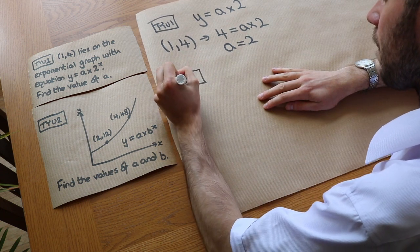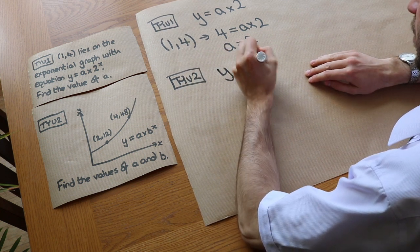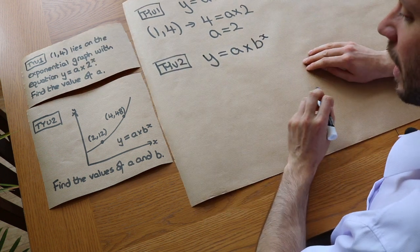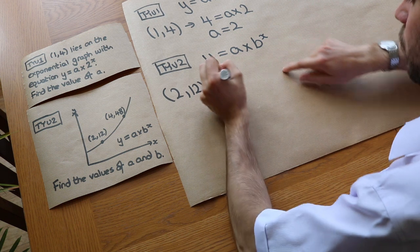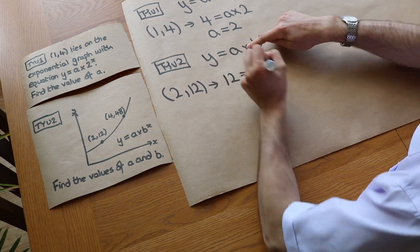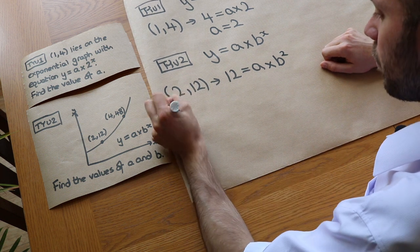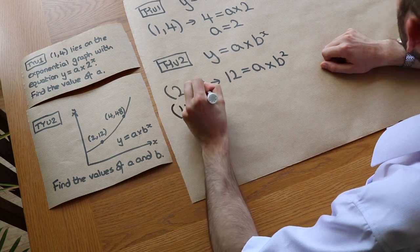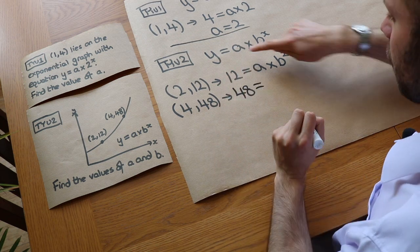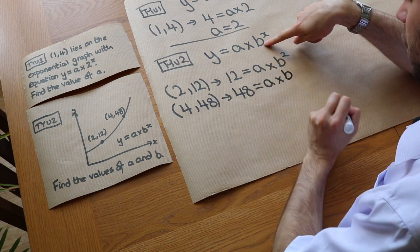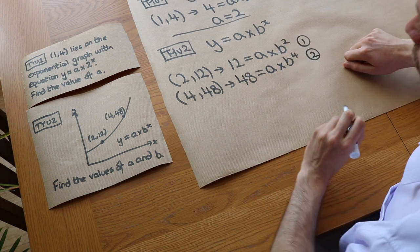For question two, we have the general exponential equation y equals A times B to the power of x. Substituting the point (2, 12): 12 equals A times B squared. Substituting the point (4, 48): 48 equals A times B to the power of 4. Labelling these as equations 1 and 2, we divide equation 2 by equation 1.